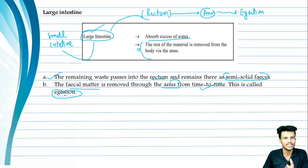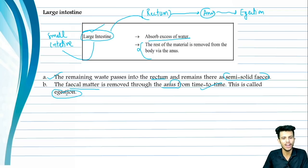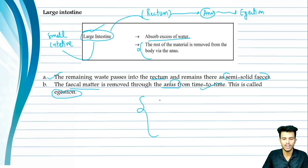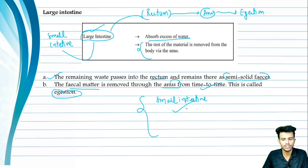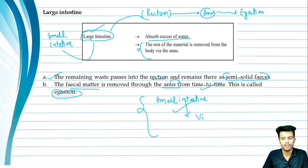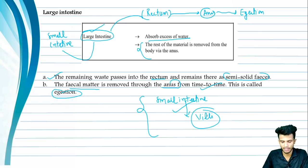So to recap: the small intestine is where complete digestion and absorption take place. Absorption occurs through the special finger-like projections called villi, which have many blood vessels. The absorbed food is carried to cells to be used, and that process is called assimilation.